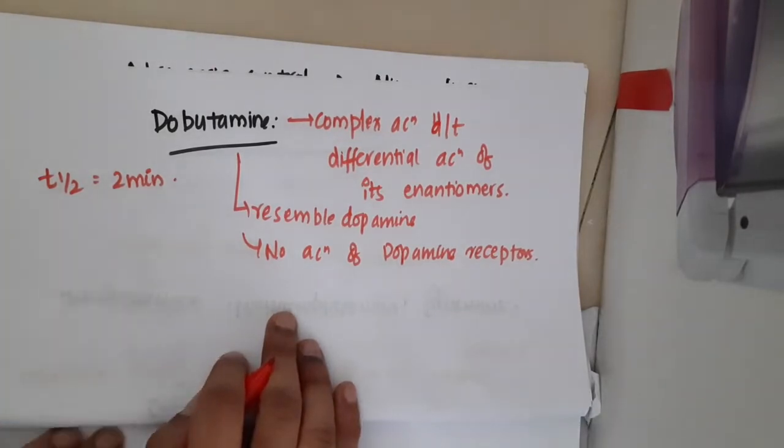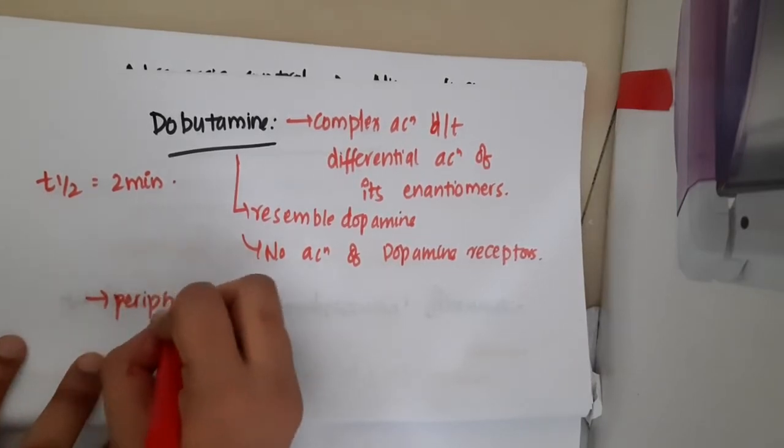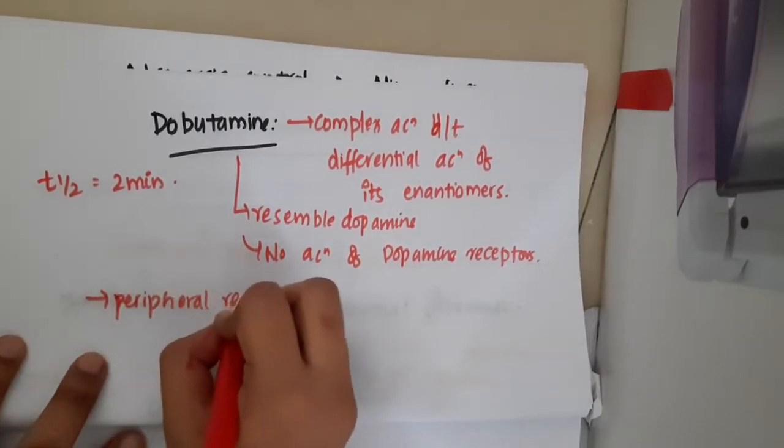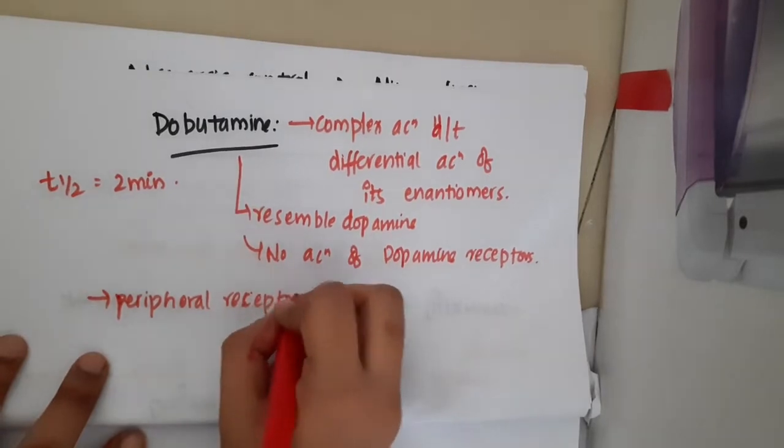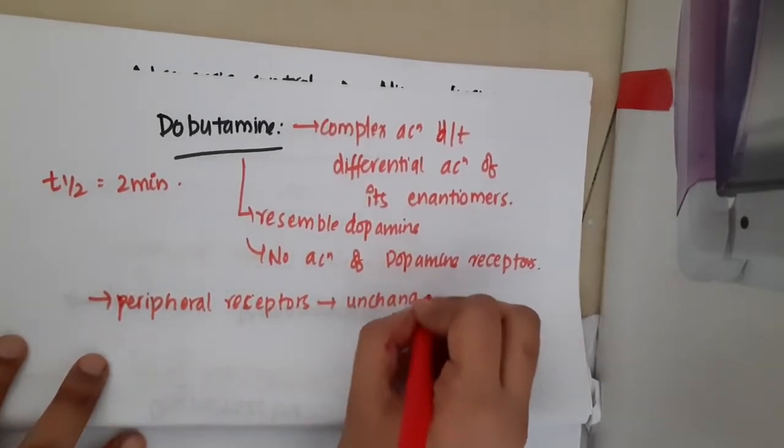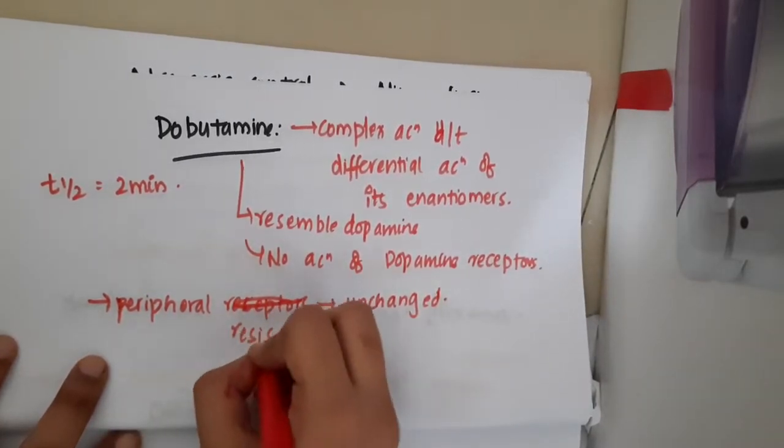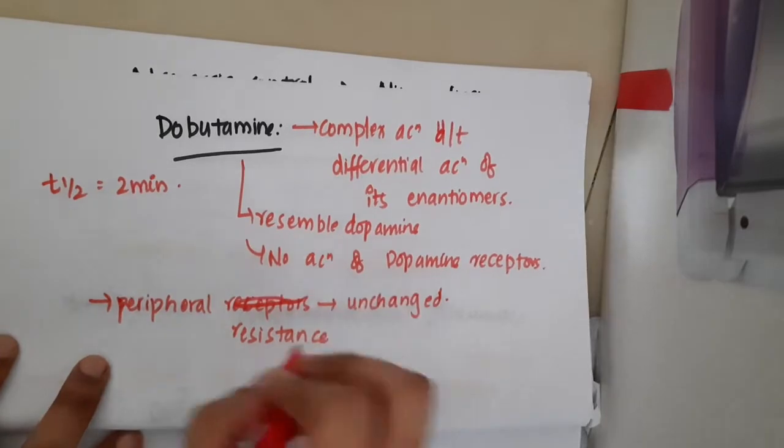The peripheral receptors of dobutamine are unchanged, so peripheral resistance remains relatively unchanged.